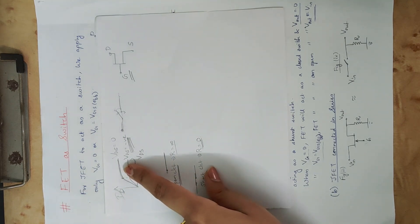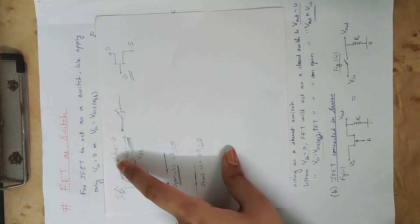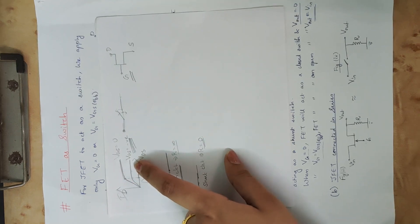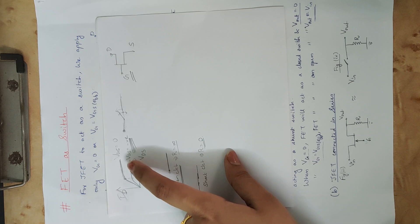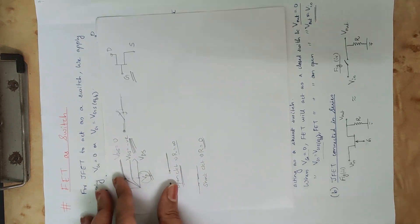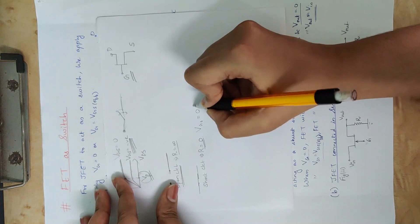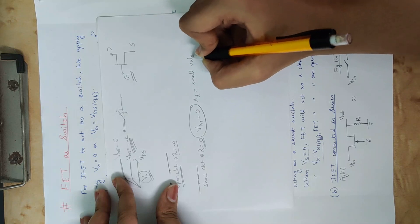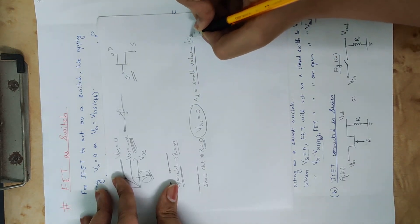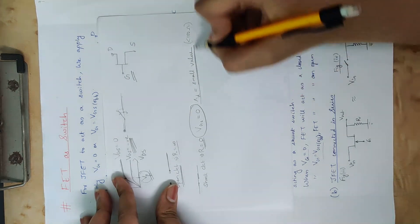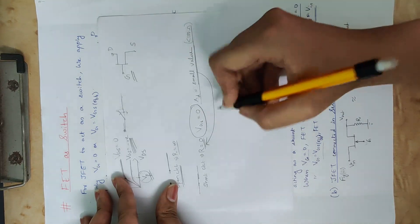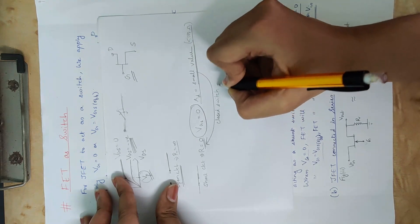Looking at the drain characteristics: if VGS equals 0, the drain resistance is small. If VGS is negative, the drain resistance is high. When VGS equals 0, drain resistance is a small value less than 100 ohms, so we approximate R equal to 0 and assume the FET acts as a closed switch.